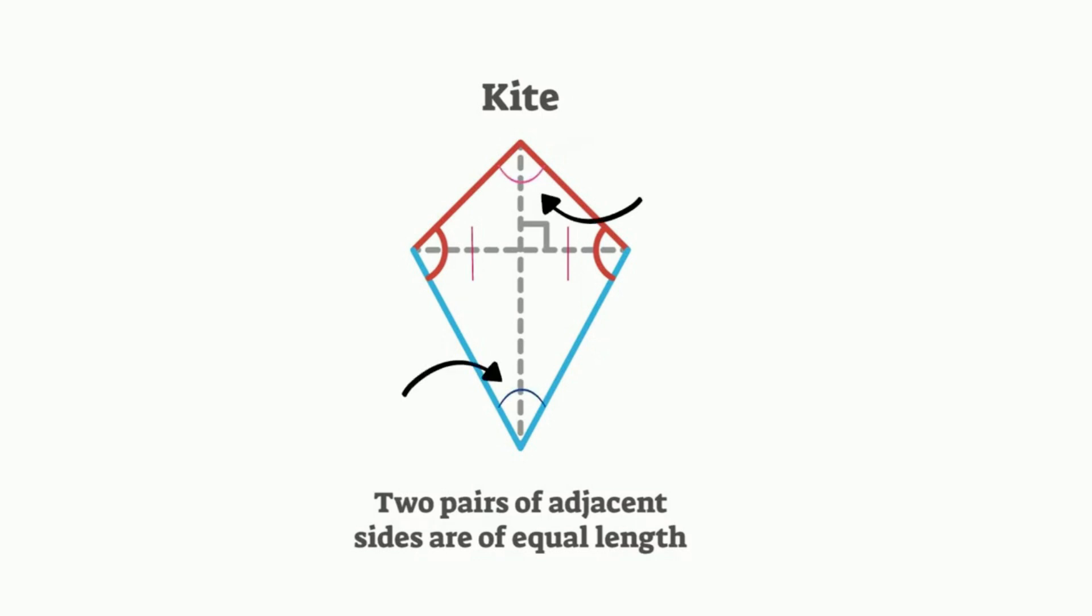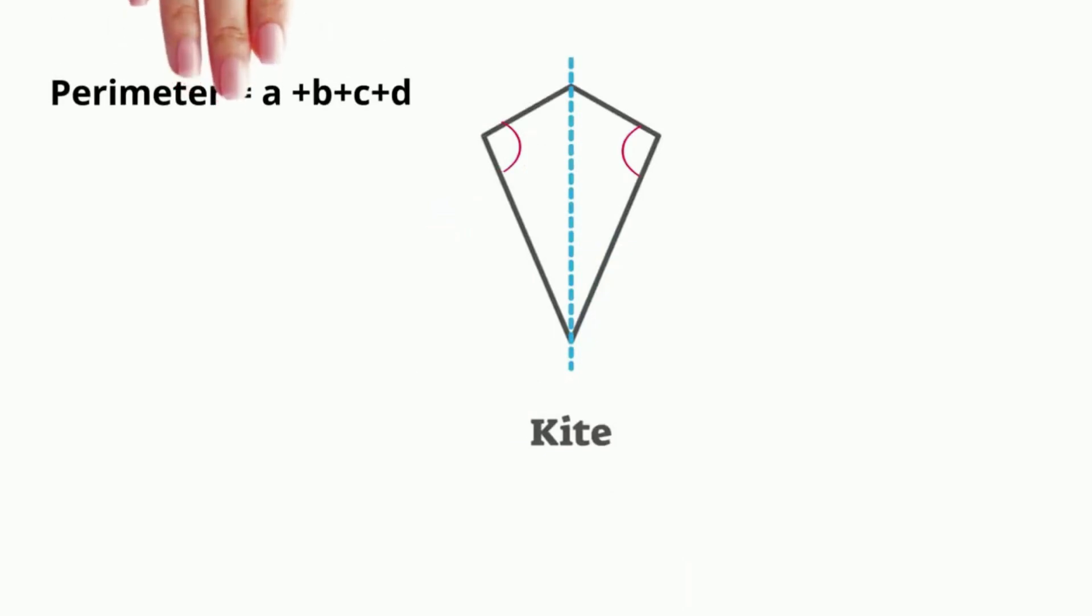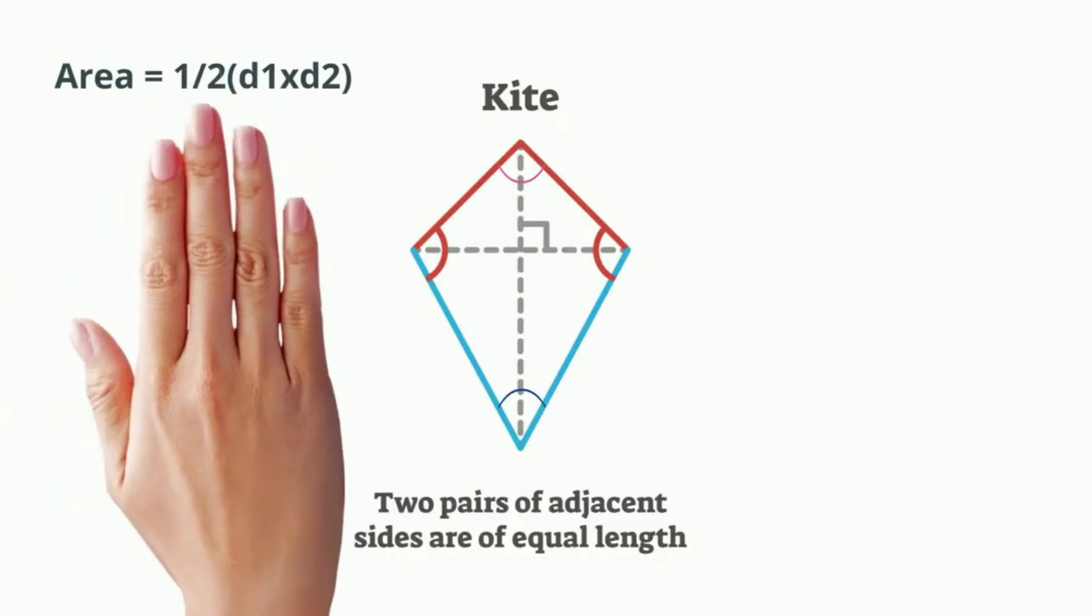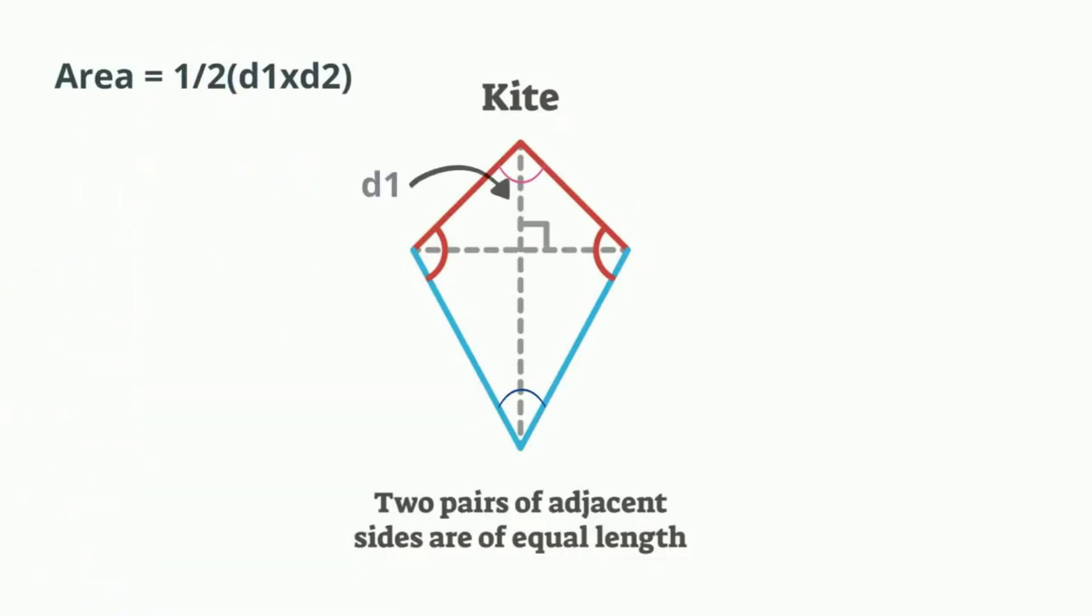The formula for finding the perimeter is side A plus B plus C plus D. The formula for finding the area is one half times diagonal 1 times diagonal 2. I hope that helps with the properties of a kite.